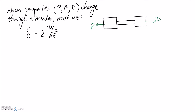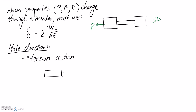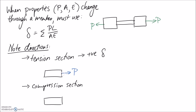The key consideration is the direction — specifically the sign convention. If a section is in tension, the internal load pulls away from the member, so it goes in as a positive value: positive PL on AE. If a section is in compression, the force pushes onto the member and tries to reduce its length, so it must go in as negative: negative PL on AE, accounting for the drop in length.